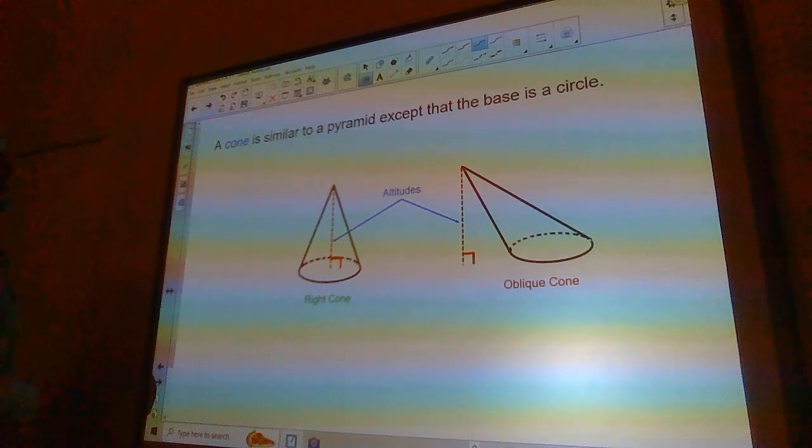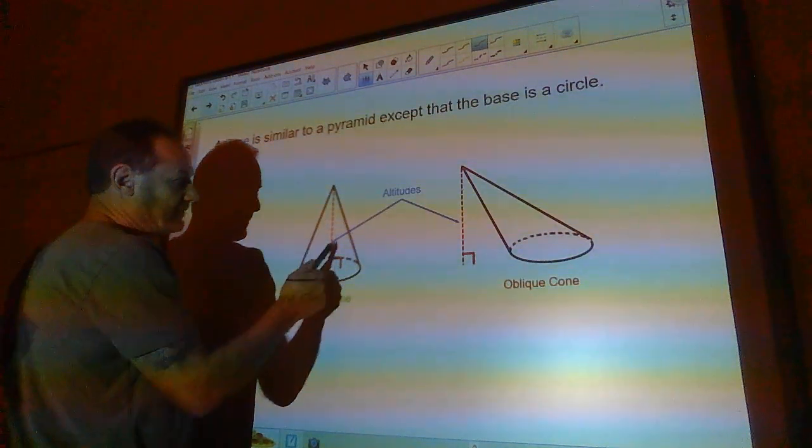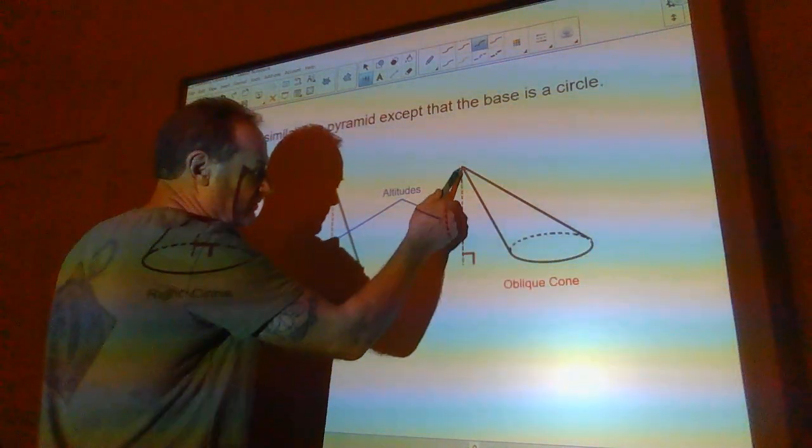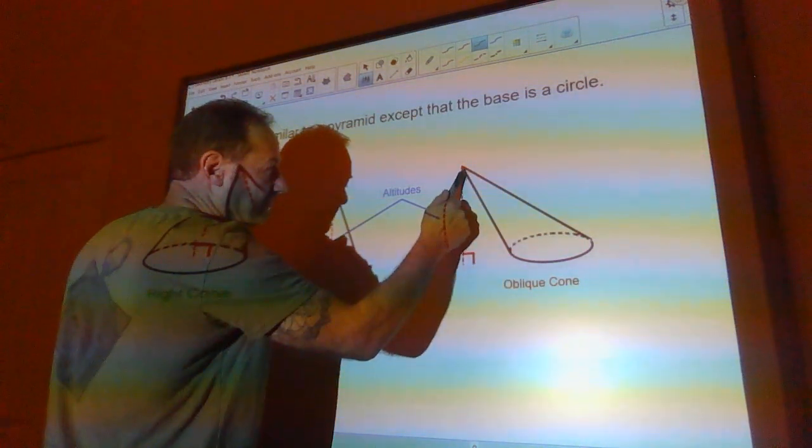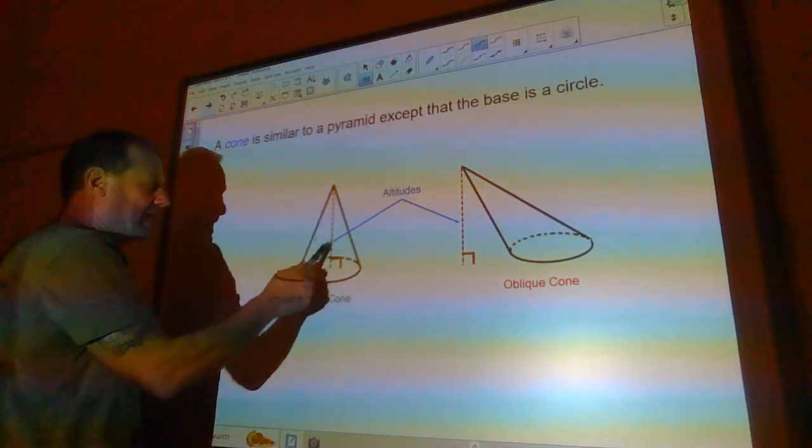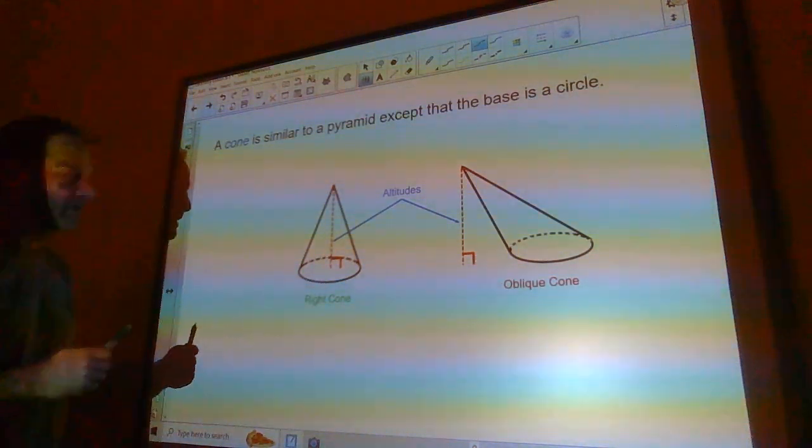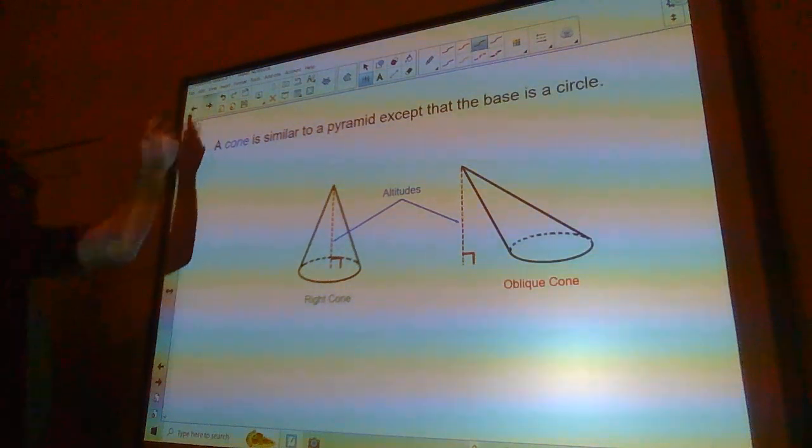A cone is similar to a pyramid except its base is a circle. So this is a right cone. This would be the altitude. This is an oblique cone. This would be the altitude. They also have an axis that goes from the vertex to the center of the circle. So this one, the altitude and the axis are the same thing in a right cone.